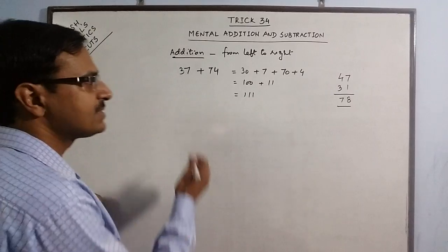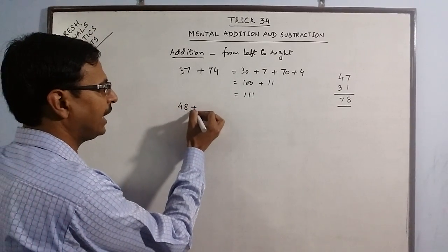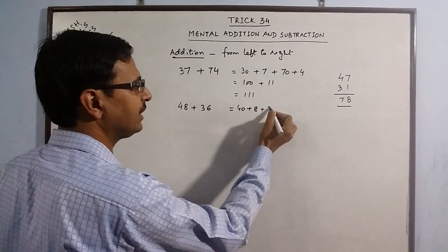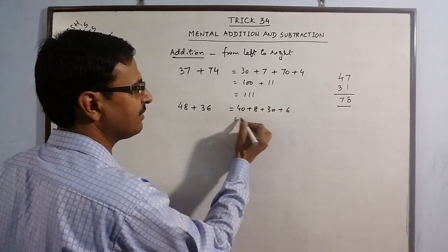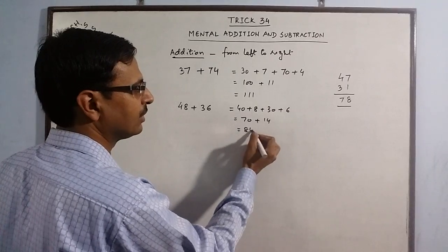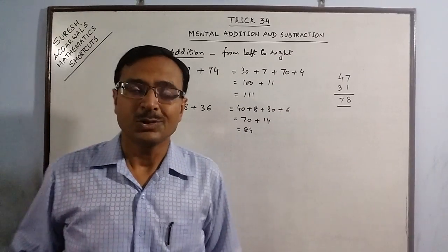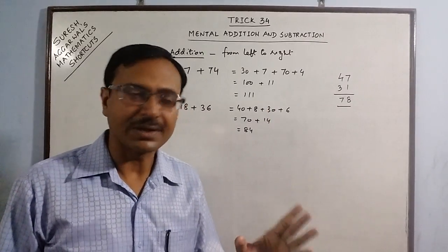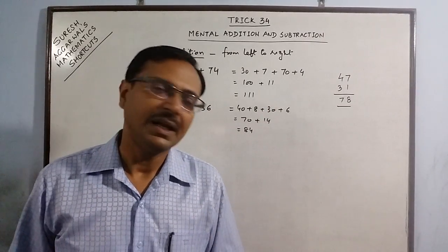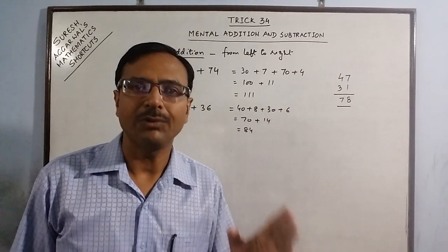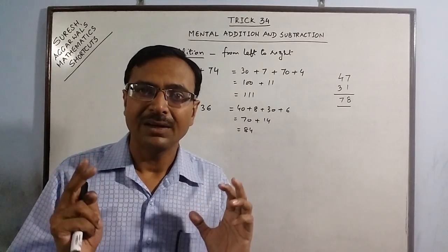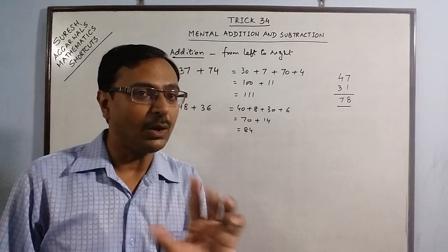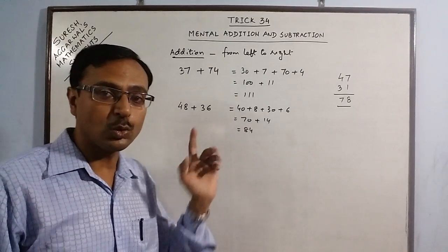I will give one more example: say we have 48 and 36. Now 48 + 36 = 70 + 14 = 84. So you see these steps are just written on the board to demonstrate the method.